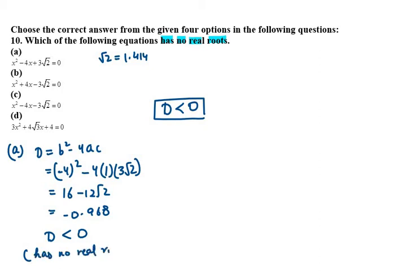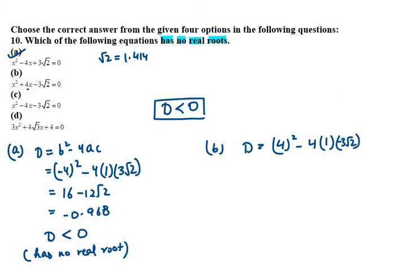The right option is part A. Let's also check option B. D equals b² - 4ac, where b is 4, a is 1, and c is -3√2. So we get 16 minus 4(1)(-3√2), which gives 16 plus 12√2. This is greater than 0, meaning this equation has two distinct real roots. So option B is cancelled out.